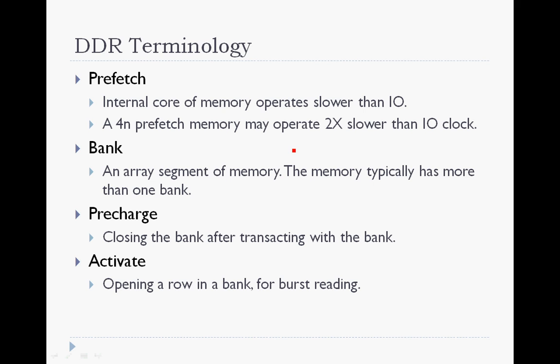In this slide let's talk about DDR terminology. Prefetch: the internal read-write access to the memory is wider than the interface access, and this width is typically known as prefetch. So in a 4N prefetch, the memory core operates 4 bits at a time, whereas the IO may only be transferring 2 bits on a DDR. The IO operates twice as fast — on both edges of the clock. Prefetch is also a distinction between various technologies; DDR2 and DDR3 may have different prefetch values.